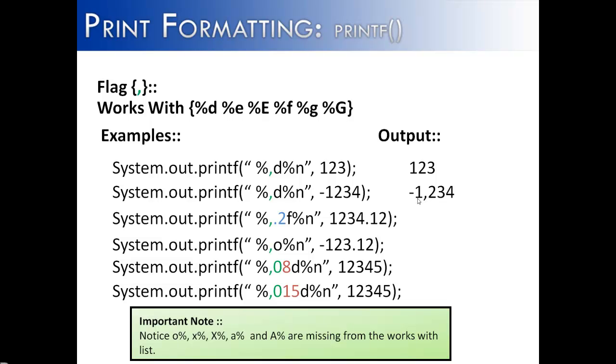In the next example, we have the comma with 2 precision and a floating point decimal. It puts the comma where you expect, after the 1 but before 234. So it groups every three numbers.